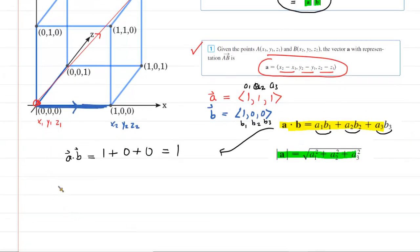Now we can find the magnitude of vector a as well as the magnitude of vector b. We're going to use this green highlighted equation, which is basically the Pythagorean theorem in three dimensions. You take the square root of the sum of the squares of each component. For vector a, we would have the square root of 1 squared plus 1 squared plus 1 squared, which gives us the square root of 3.